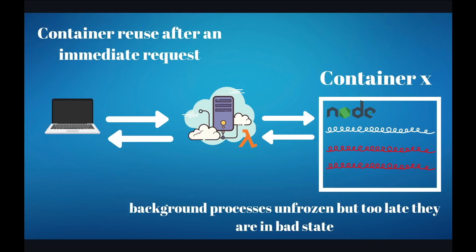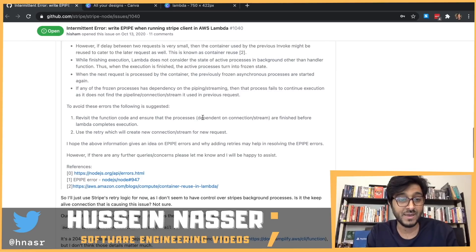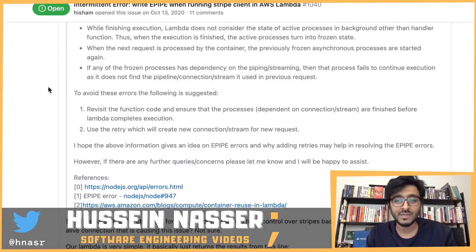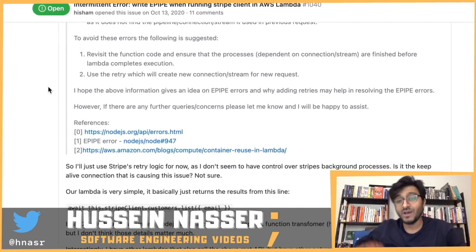So the same container was reused, and we started reusing the same main thread. But those frozen background connections unfroze and woke up — like coming out of hibernation and finding everything has changed. And boom — it crashes. The process thinks the TCP connection is alive, which it's not, tries to do its thing, gets the EPIPE error, and fails.